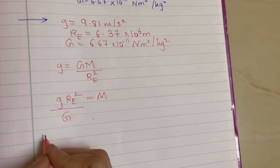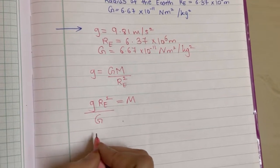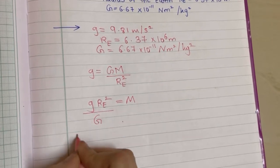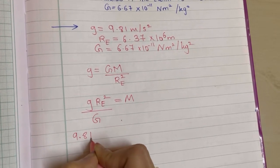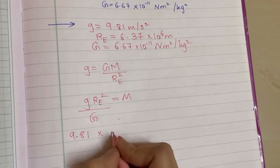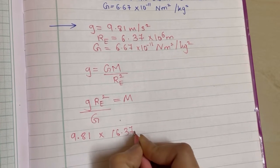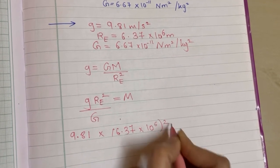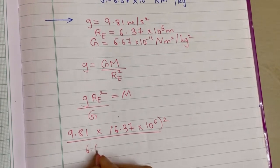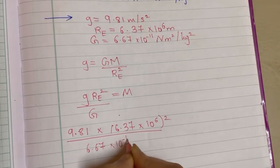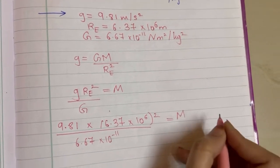Now this is the substitution part and some log calculation, then the answer is done. g is 9.81 into Re square, that is 6.37 into 10 raised to 6, the whole square, upon G that is 6.67 into 10 raised to minus 11 and here you have your M.